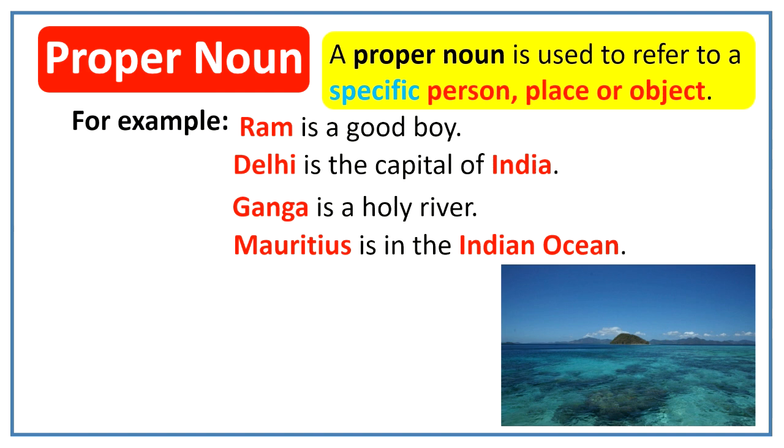Here you can see that Ram is a specific person. Delhi, India and Mauritius are specific places. Ganga is a specific river and Indian Ocean is a specific ocean. So all these are proper nouns.